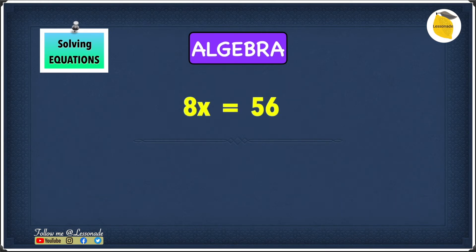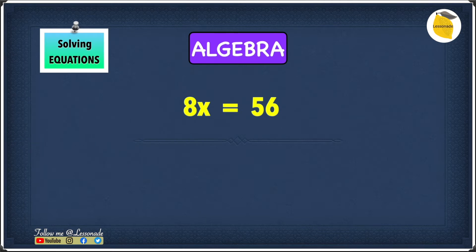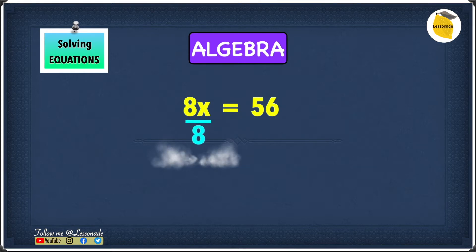Let's have a look at an example: 8x equals 56. As you can see in this example, there is no arithmetic symbol. If there is no arithmetic sign between a number and a symbol, it means it is being multiplied. So therefore, 8x is basically 8 times x. Because the 8 is being multiplied to the x, we need to make sure that x is on its own, so we have to undo that times 8. We can undo the times 8 by dividing by 8.